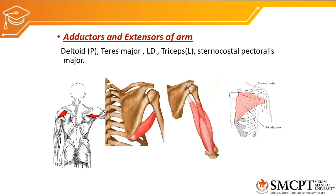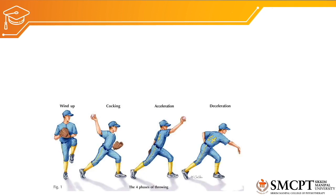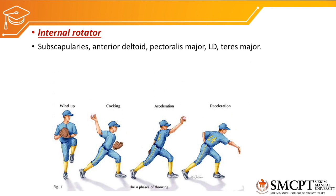The adductors and extensors of the glenohumeral joint are the deltoid, teres major, latissimus dorsi, triceps, long head of triceps, and pectoralis major. The external rotators are the infraspinatus, posterior deltoid, and teres minor. The internal rotators of the glenohumeral joint are the subscapularis, anterior deltoid, pectoralis major, latissimus dorsi, and teres major.